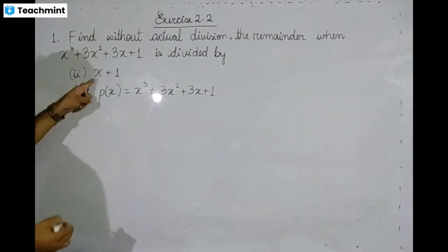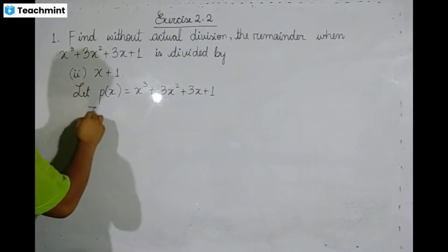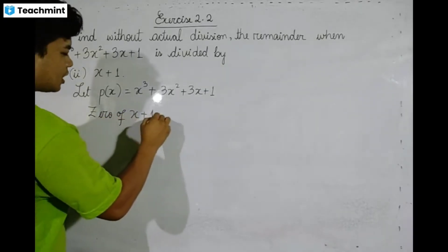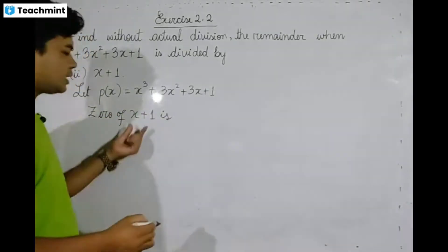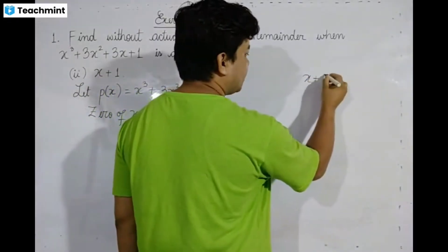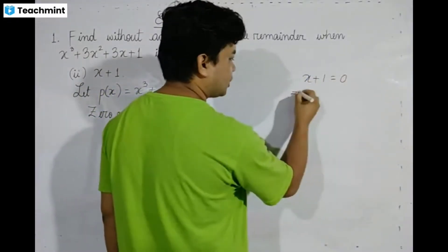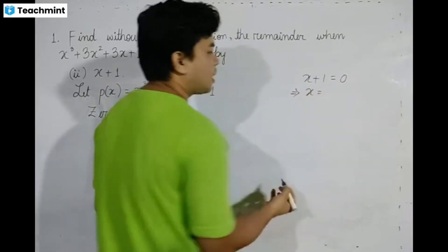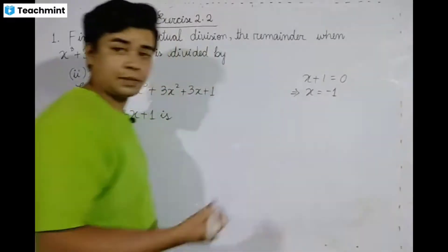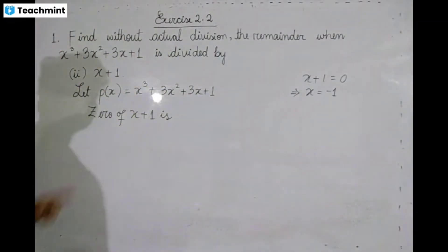To find the zero of x + 1, set x + 1 = 0, therefore x = -1. We substitute x = -1 into the polynomial to find the remainder.